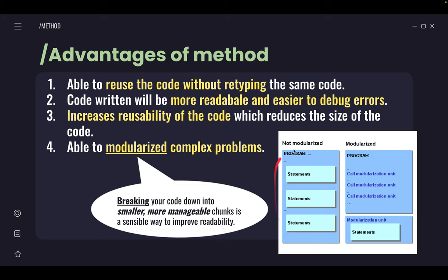Last but not least, with a method you are able to modularize complex problems. Modularize means you are able to break your code down into smaller, more manageable chunks in a sensible way to improve readability. If you look here, without modularization, your main method will have many statements repeated. For example, if we want to calculate the sum of two numbers four times, we'd need to write those statements many times. Compare that to modularization where we compile the way to calculate the sum of two numbers into a method, so we just call back the method four times. From that we can see it's more efficient and increases the efficiency of your coding.